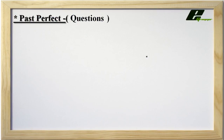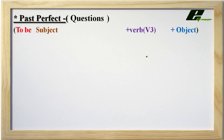Now we'll make some questions in past perfect tense. For questions, I interchange the places of subject and 'had'. Subject comes at the place of 'had' and 'had' comes at the place of subject, and that sentence becomes a question. To change the places of these two words — that's all it takes to form a question.